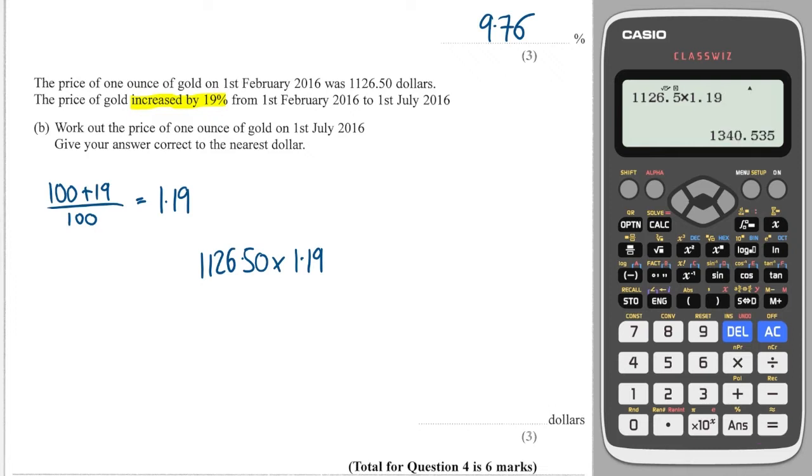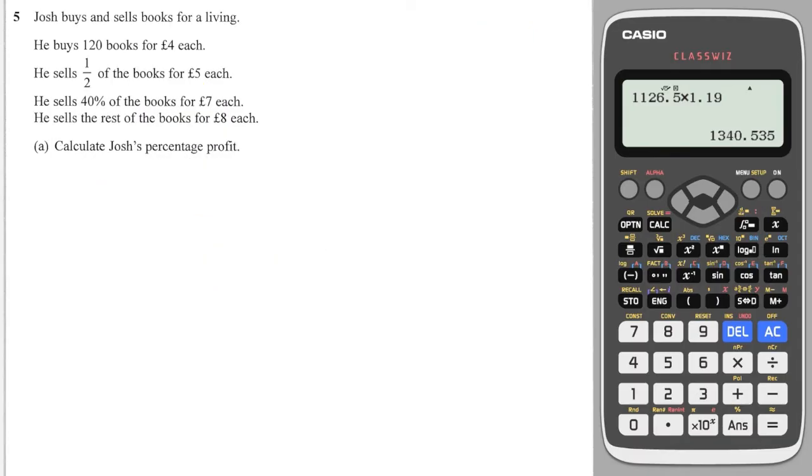And I will get to the nearest dollar that'll be $1,341. Okay, Josh buys and sells books for a living. He buys 120 books for £4 each, so 120 times by 4 is his initial outlay and that is £480. He sells half of the books for £5 each, so he sells 60 of them for £5 and that is